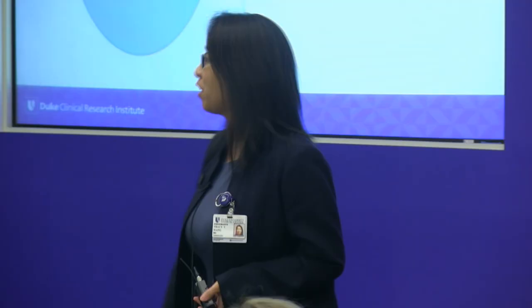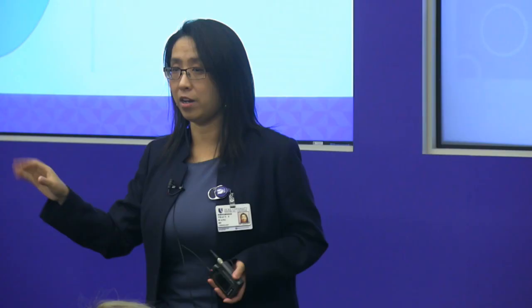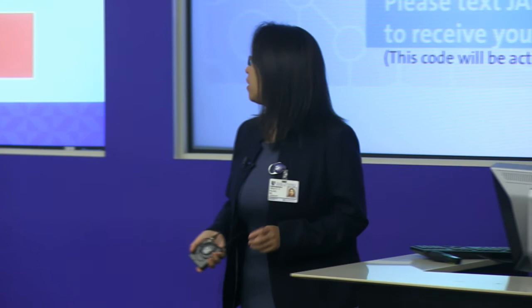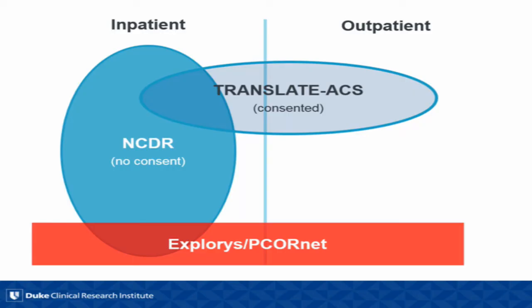NCDR is something we've been working with for more than a decade, working with the American College of Cardiology. This is a registry that really focuses on the inpatient hospital course. It's a quality improvement registry, so there was no need for informed consent. But the data collection stops at the hospital door — once the patient leaves the hospital, we have no way to follow that patient. This is Translate ACS, which was built on the NCDR format, and now we're crossing from the inpatient into the outpatient space. In order to do that, we needed to consent patients to be part of our registry study to be able to follow them long term. Underneath that are things like Explorys and PCORnet — these are our EHR comparators, which obviously don't require patient consent because these are data captured from routine clinical care.